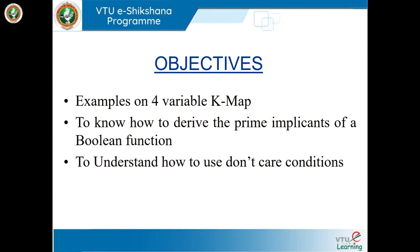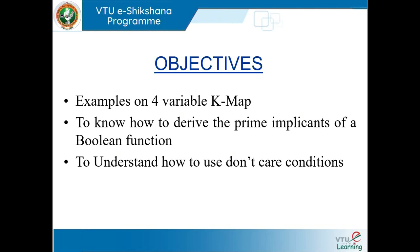Hello everyone, welcome to digital design classes. My name is Vinuta. In the previous lectures we have seen how to design when the Boolean expression is given, how to simplify it using the manual method and also using the K-map method. We covered K-map examples for two and three variables. Today we will discuss the K-map for four variables, how to simplify a four-variable Boolean expression, how to derive prime implicants, and also the don't care conditions.